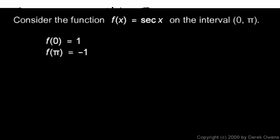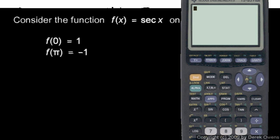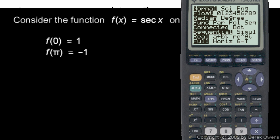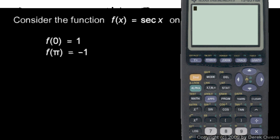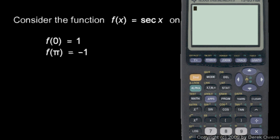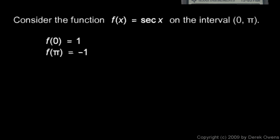You can check this: f of 0 is equal to 1, and f of pi is equal to negative 1, and we can see that on the calculator. In radian mode, secant is 1 over the cosine, so 1 divided by cosine of 0 is 1, and 1 divided by cosine of pi is negative 1.